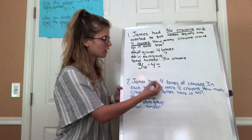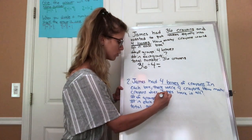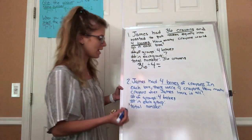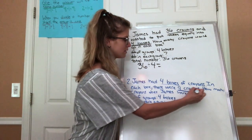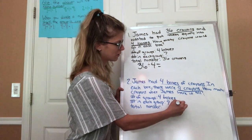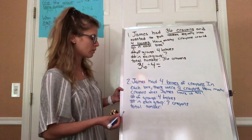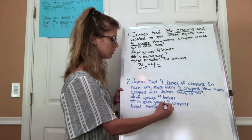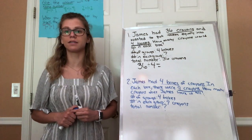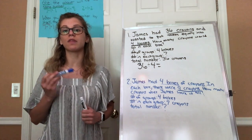Here it says that James had four boxes, so the number of groups would be four boxes. And in each box there were nine crayons, so number in each group would be nine crayons. Then it asks how many crayons does James have in all, so we're trying to figure out the total number of crayons. Pause and think about an equation that can represent this problem.